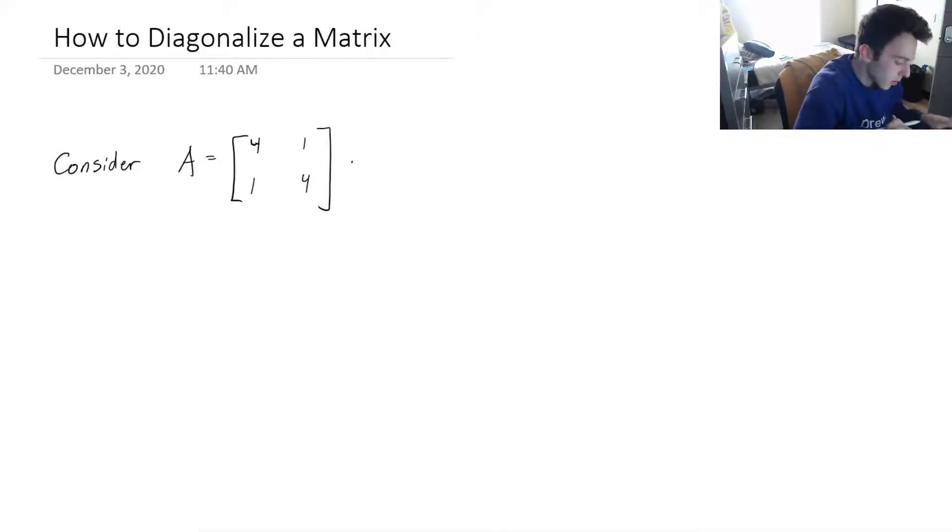Hey everyone, in this video we're going to take a look at diagonalizing a matrix. So we're considering this matrix A, a 2 by 2 matrix, and first we want to see if we can diagonalize it, and then if we can, let's diagonalize it.